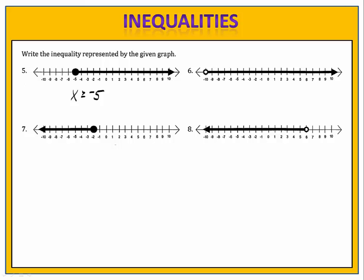In exercises five through eight, we're given a graph and asked to write the inequality. In exercise five, we can see that everything greater than negative five has been shaded, and there's a solid circle at negative five, which means x is greater than or equal to negative five. In exercise six, x is greater than negative ten — all numbers larger than negative ten are shaded and there's an open circle, indicating only greater than, not greater than or equal to. Exercise seven: x is less than or equal to negative two — all values less than negative two are shaded and there's a solid dot at negative two. Exercise eight: x is less than six, with an open circle at six indicating that value is not included.